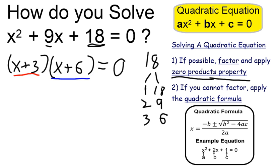If x plus 3 equals 0, that must mean that x itself would be negative 3, because negative 3 plus 3 is 0. So one possible solution is x equals negative 3.